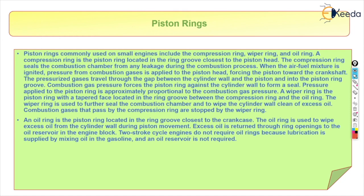When the air-fuel mixture is ignited, the pressure from combustion gases is applied to the piston head, forcing the piston towards the crankshaft. The pressurized gases travel through the gap between the cylinder wall and the piston and into the piston ring groove. The combustion gas pressure forces the piston ring against the cylinder wall to form a seal. The pressure applied to the piston ring is approximately proportional to the combustion gas pressure.